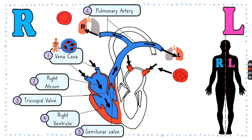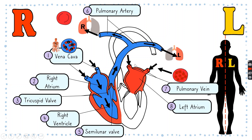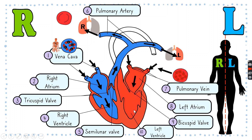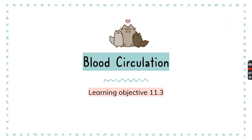After the deoxygenated blood leaves via the pulmonary artery, it goes to the lungs where it gains oxygen and becomes oxygenated. On the left side, the pulmonary vein receives oxygenated blood first from the lungs, then it enters the left atrium, which contracts and opens the bicuspid valve. Tricuspid valve is on the right side, bicuspid valve on the left. The blood enters the left ventricle, the semilunar valve opens, and the blood is transported through the aorta to all parts of the body. Those structures on the inside are the tendons.